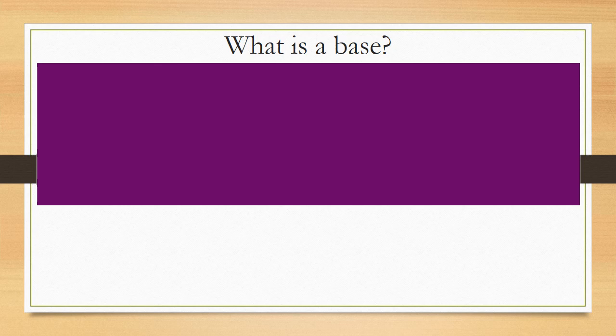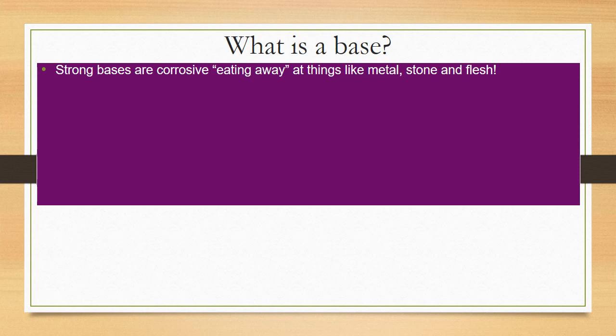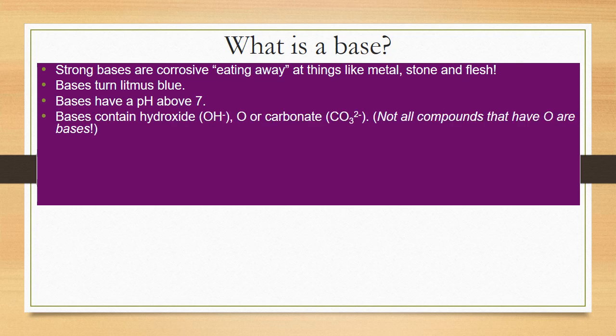Now, what is a base? A strong base, just like a strong acid, is corrosive — it eats away at metals, stone, and your flesh. Bases turn litmus paper blue and have a pH above 7. Bases contain hydroxide (OH⁻) or carbonate (CO₃²⁻) ions.